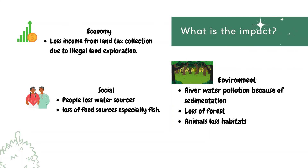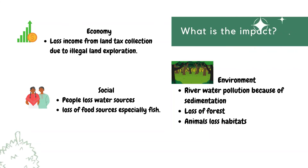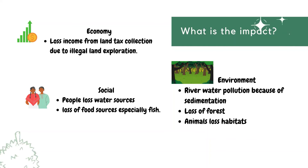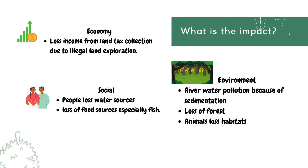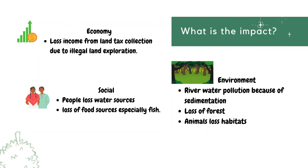The second impact is social: loss of water resources. People who highly depend on rivers as water resources will be affected because sedimentation from land clearing pollutes the water. This also causes loss of food sources, especially fish, because sedimentation affects the spawning ground.